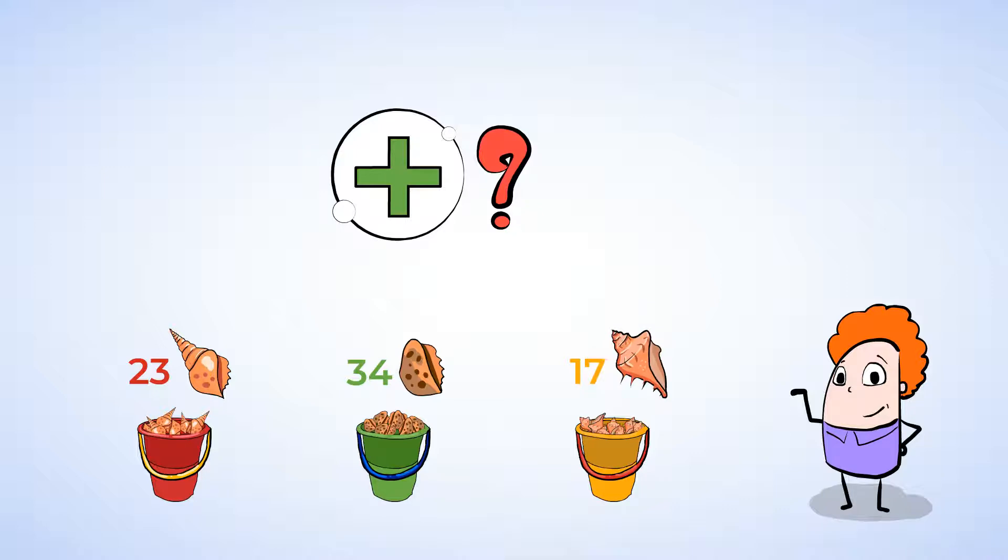Let's write out our equation again, but this time we can try lining up each number based on place value. Like this. This helps us stay organized. Now all of the digits in the ones place, the 3, 4, and 7, are aligned.